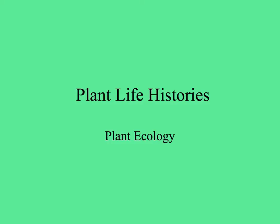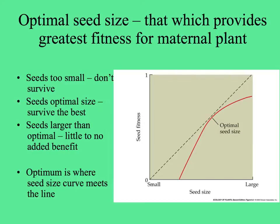In Plant Life Histories, we'll talk about things like optimal seed size. Seeds might be either too small to survive if the resulting seedling is too small to get established, or if they're too large, they won't be able to be dispersed away from the plant or fit into the mouth of the seed-eating seed disperser. The optimal size survives the best, and the optimum is where the seed size curve meets that line.